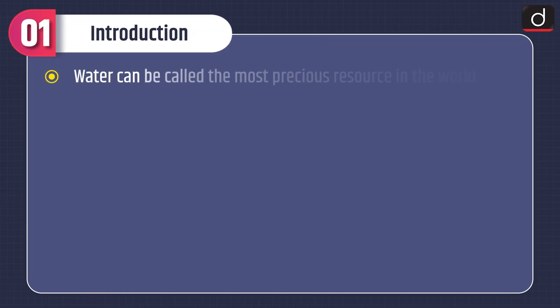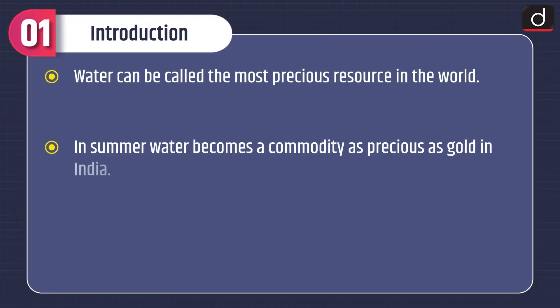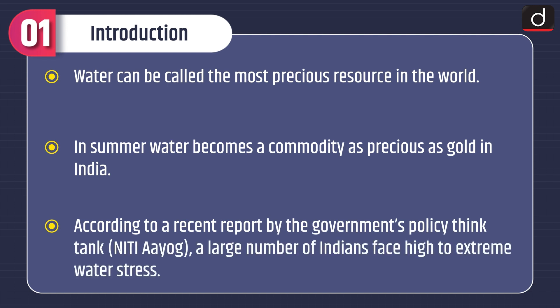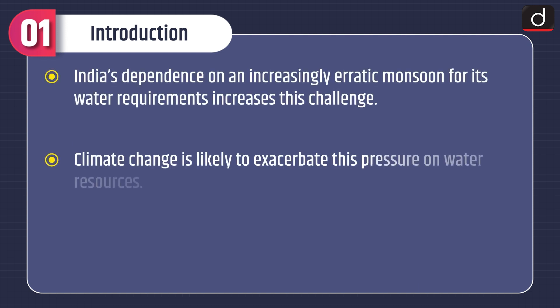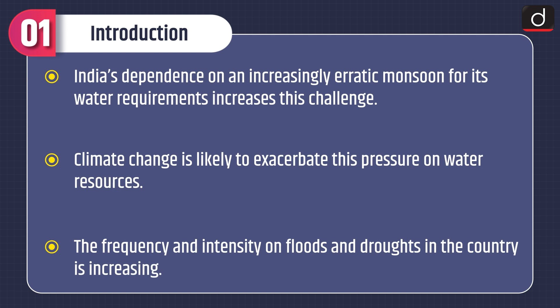First of all let's have a look at a brief introduction of the topic. Water can be called the most precious resource in the world. In summer, water becomes a commodity as precious as gold in India. According to a recent report by the government's policy think tank Niti Aayog, a large number of Indians face high to extreme water stress. India's dependence on an increasingly erratic monsoon for its water requirements increases this challenge.